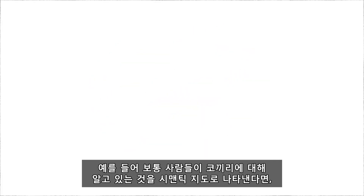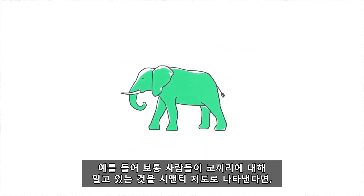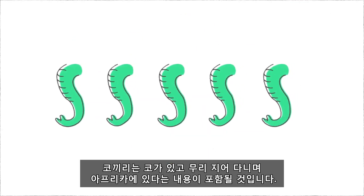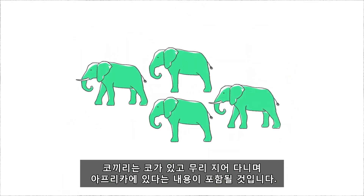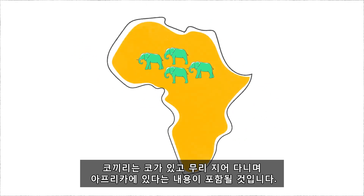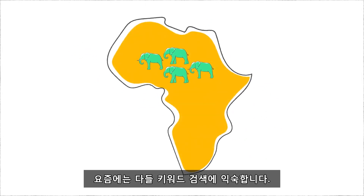For example, a semantic map of what the average person knows about elephants would include things like elephants have trunks, elephants travel in herds, and elephants live in Africa.